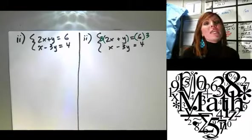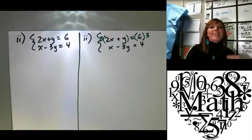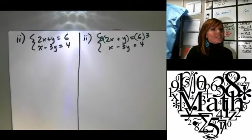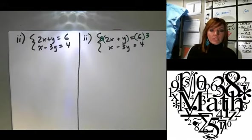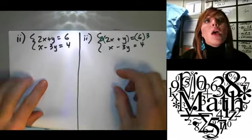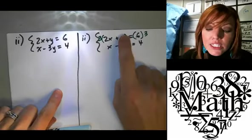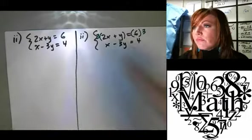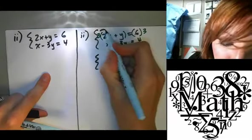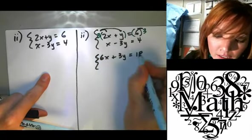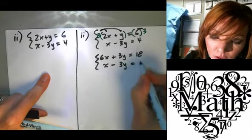Now, is there something else we could do instead of multiplying the top equation by 3 so that we would get the x's to cancel out? How would we have to multiply something to get the x's to cancel out? What do you guys think? Kendra? Positive 2 or negative? Excellent. She would multiply the bottom one by negative 2 to get the x's to cancel out. Either of those solutions works just fine. Okay. I would agree that these would be easier just because one's already positive, one's negative. So let's rewrite this. Having distributed that 3 everywhere. So we get 6x plus 3y equals 18. That's what the top comes out to.